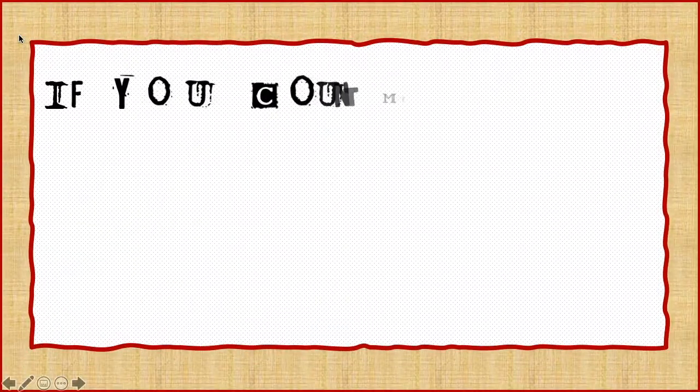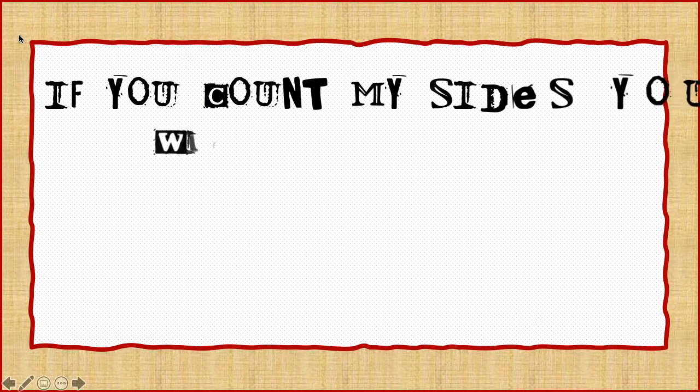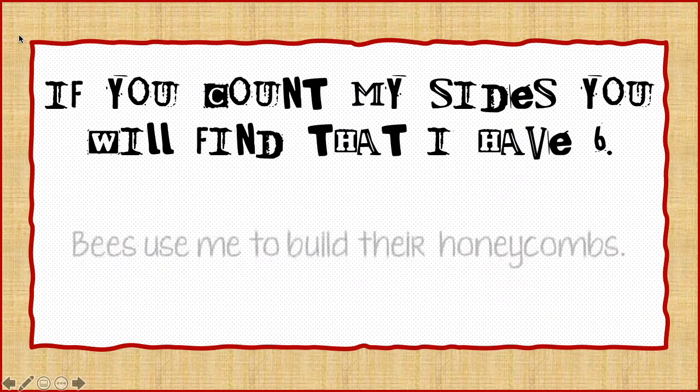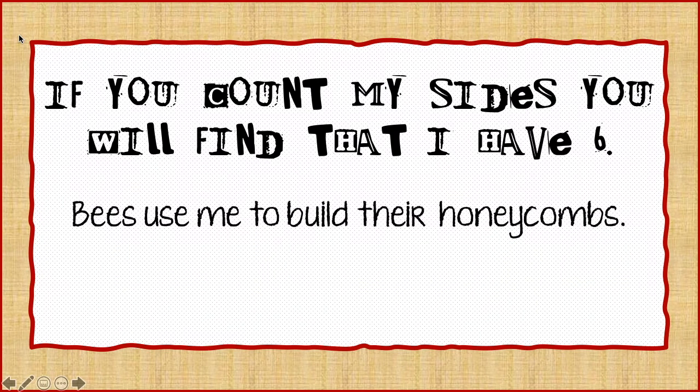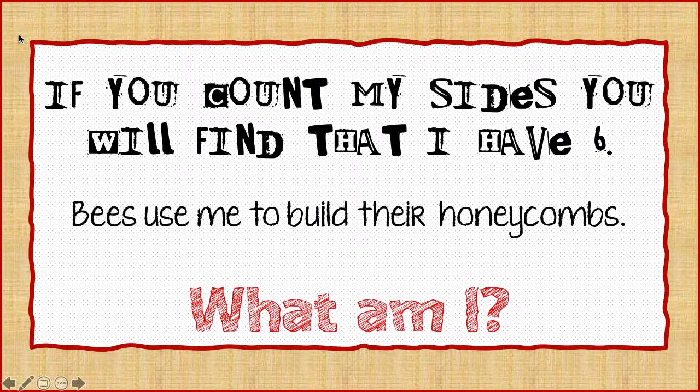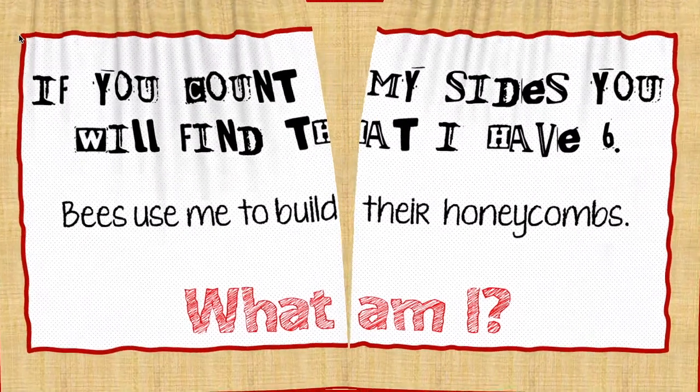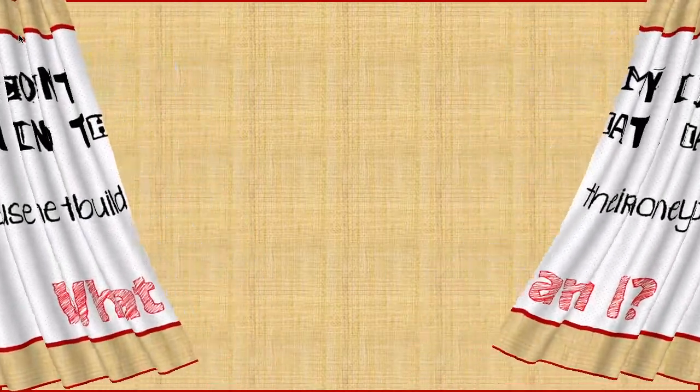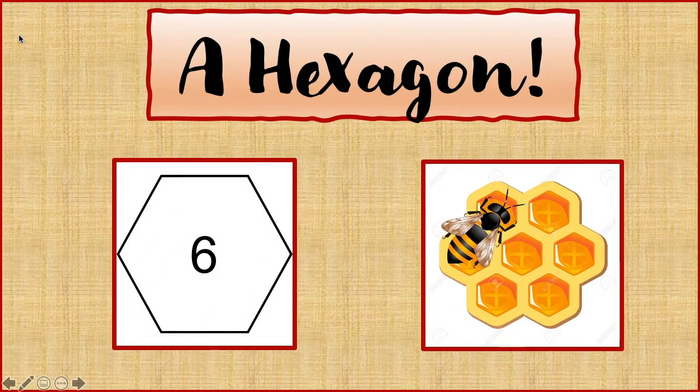Here is riddle number three. If you can count my sides, you will find that I have six. Bees use me to build their honeycombs. What am I? A hexagon. You got it.